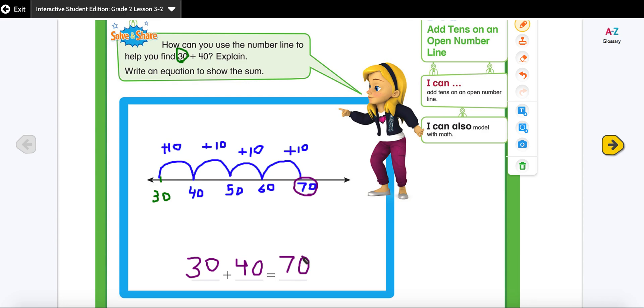Now I'm going to use another strategy to check whether my work is correct or not. So I'm going to use my standard algorithm method. I have my ones. I have my tens. I'm going to line the addends this way so all the ones are together and all the tens are together. So 30 plus 40 and I have 0.